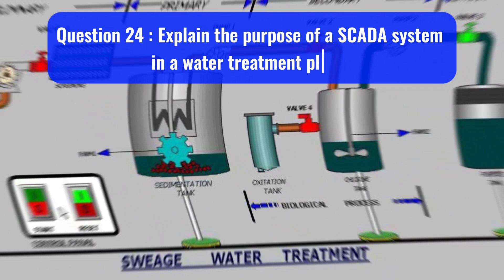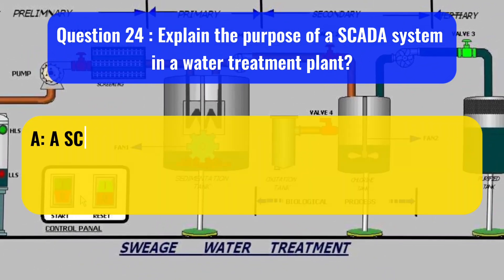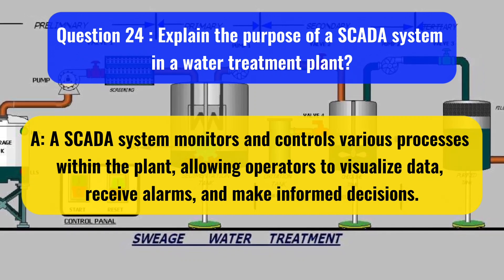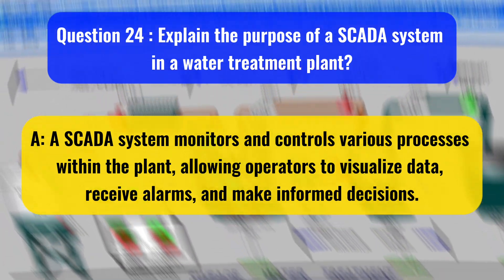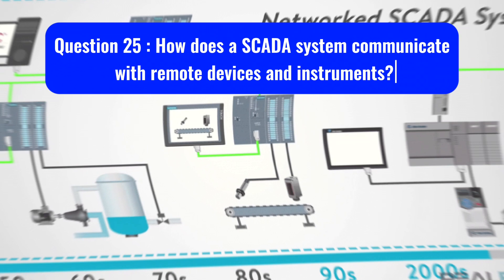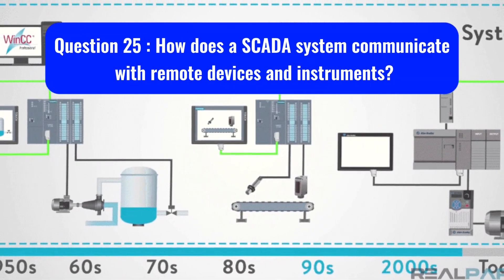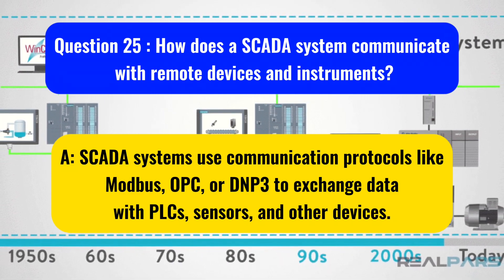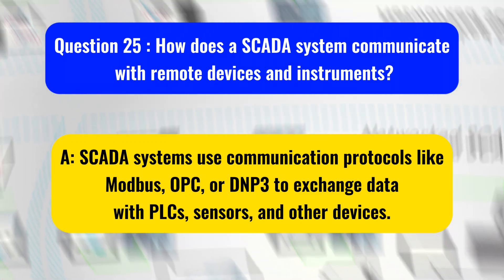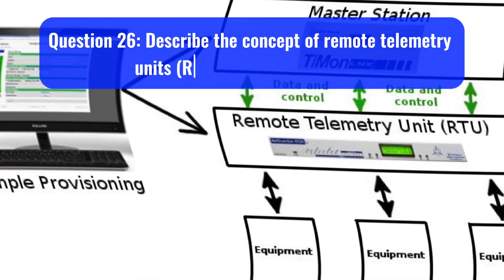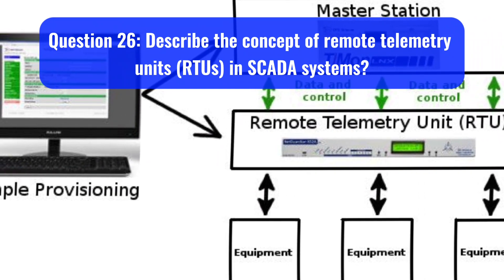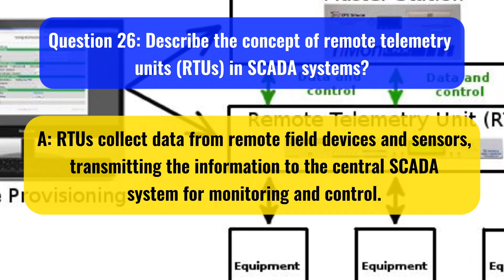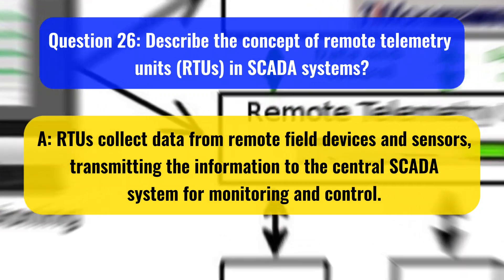Question 24: Explain the purpose of a SCADA system in a water treatment plant. A SCADA system monitors and controls various processes within the plant, allowing operators to visualize data, receive alarms, and make informed decisions. Question 25: How does a SCADA system communicate with remote devices and instruments? SCADA systems use communication protocols like Modbus, OPC, or DNP-3 to exchange data with PLCs, sensors, and other devices. Question 26: Describe the concept of remote telemetry units (RTUs) in SCADA systems. RTUs collect data from remote field devices and sensors, transmitting the information to the central SCADA system for monitoring and control.